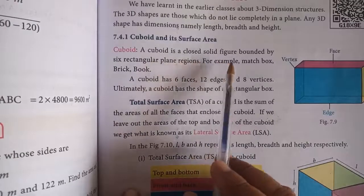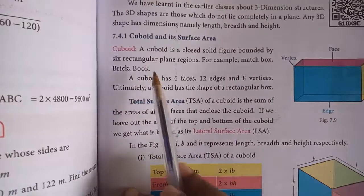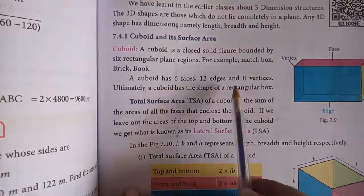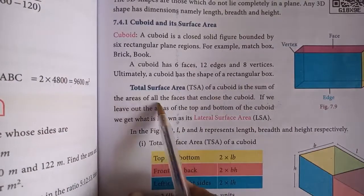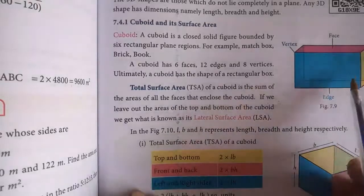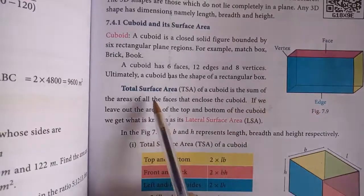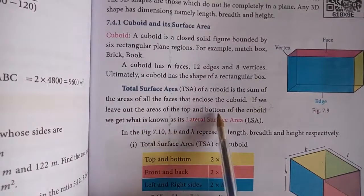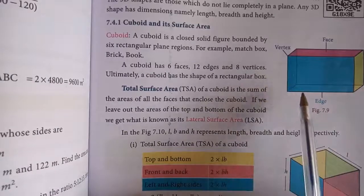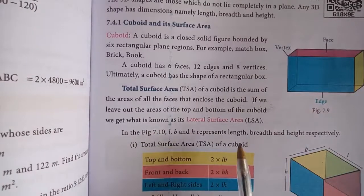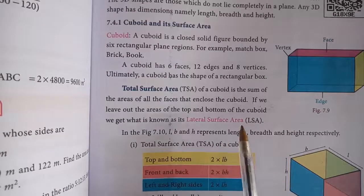A cuboid is a closed solid figure bounded by 6 rectangular plane regions. Examples include a matchbox, brick, and books. A cuboid has 6 faces, 12 edges, and 8 vertices. The total surface area (TSA) is the sum of the areas of all the faces that enclose the cuboid. If we leave out the areas of the top and bottom, we get the lateral surface area (LSA) of the cuboid.